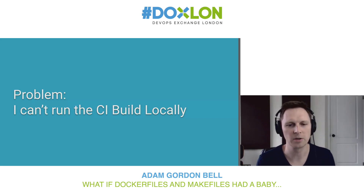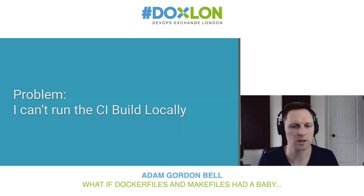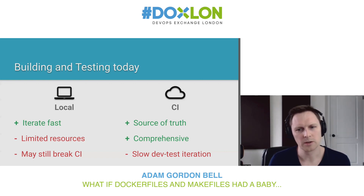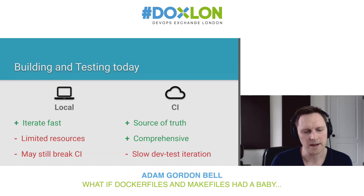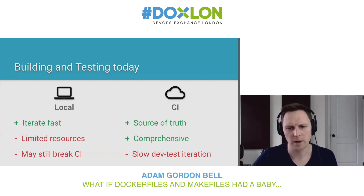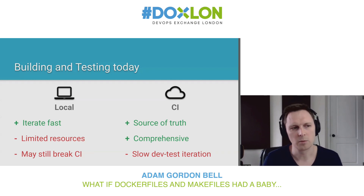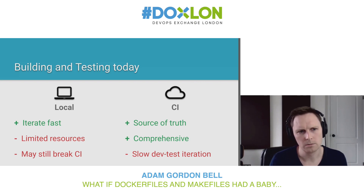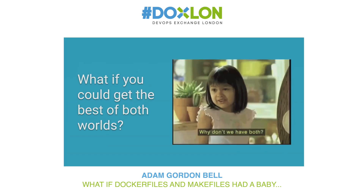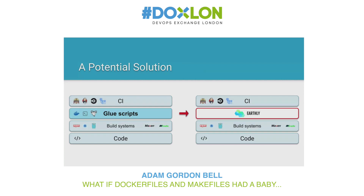The problem is I can't actually run the build locally. I want to be able to run the exact same steps that happen in the build process locally, with the same dependencies and the same containerized environment. On local you can iterate really fast but you have limited resources and things might still break on CI. CI is the source of truth — that's where it actually matters if your comprehensive test suite passes. But you have this really slow cycle and it's not always truly isolated. What if you could get both?